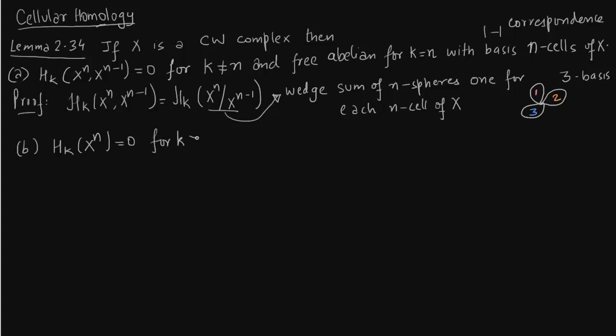So H_k(X^n) is 0 for k greater than n. So for this we have to write the long exact sequence.